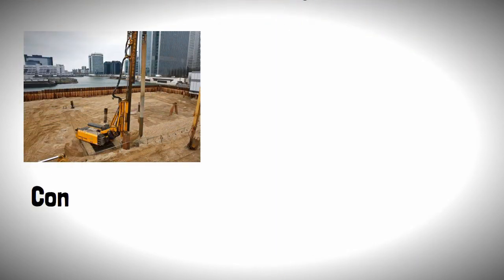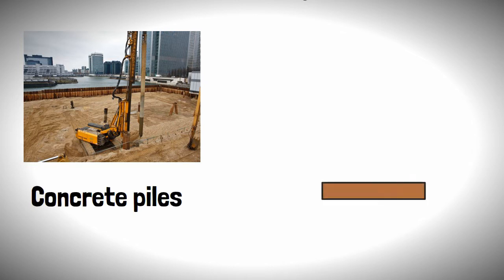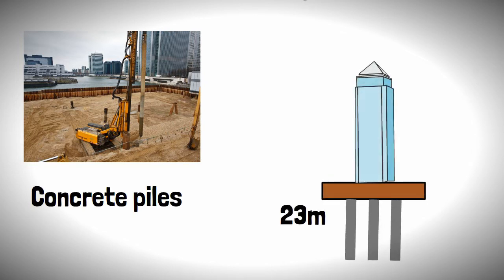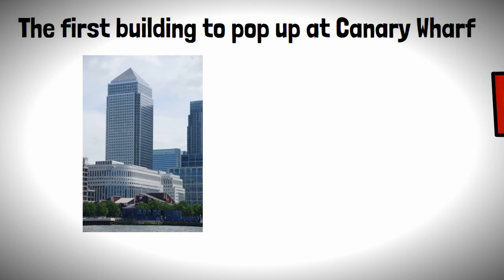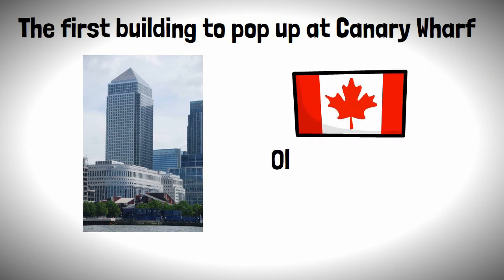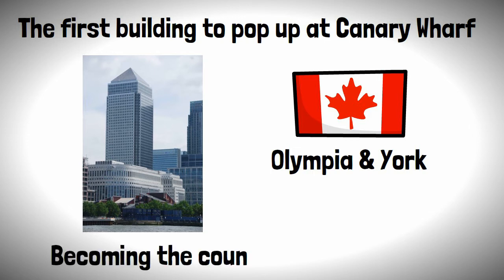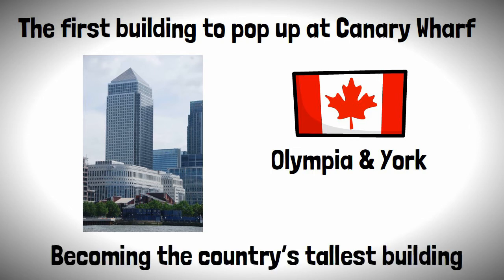Once the ground was finished, the foundation of the buildings could go in, which mainly consisted of concrete piles driven into the ground up to 23 meters on One Canada Square. The first building to pop up at Canary Wharf was One Canada Square, which paid homage to the home nation of the developer Olympia and York, opening in 1991 and becoming the country's tallest building standing at 235 meters.